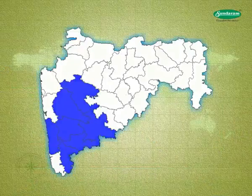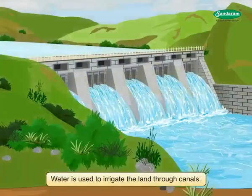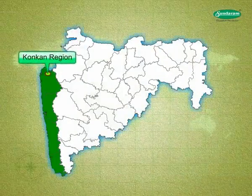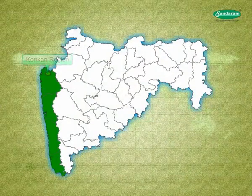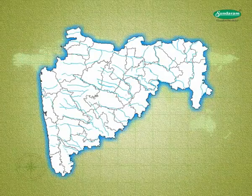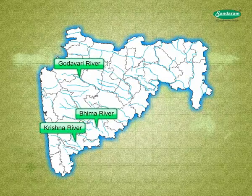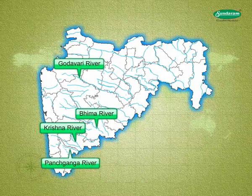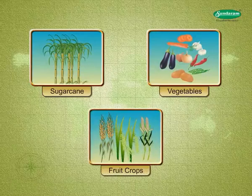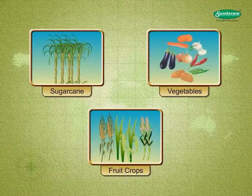In Western Maharashtra, dams are constructed across the rivers and water is used to irrigate the land through canals. In Central Maharashtra and Konkan, irrigation projects are limited and accordingly irrigated areas are also limited. Dams are constructed on Godavari, Krishna, Bhima, and Panchaganga rivers in Maharashtra. Sugarcane, vegetables, and various food crops are cultivated where the source of water supply is available.